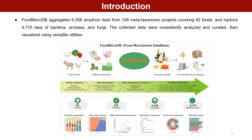Introduction: FoodMicroDB aggregates 6,358 amplicon data from 108 metataxonomic projects covering 62 foods, and harbors 4,710 taxa of bacteria, archaea, and fungi. The collected data were consistently analyzed and curated, then visualized using versatile utilities.